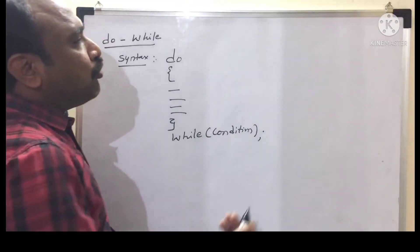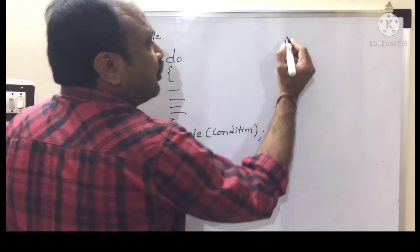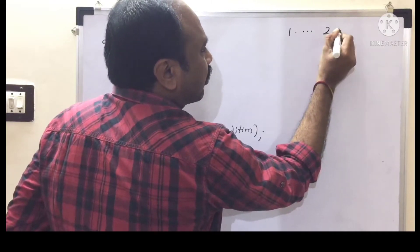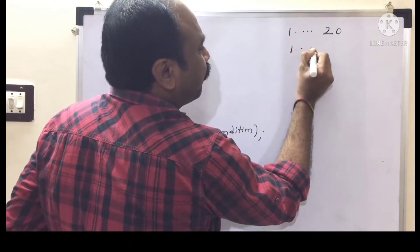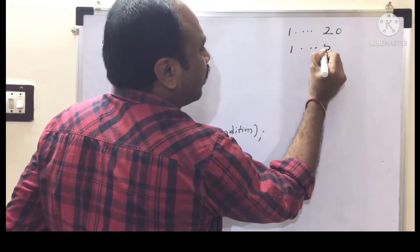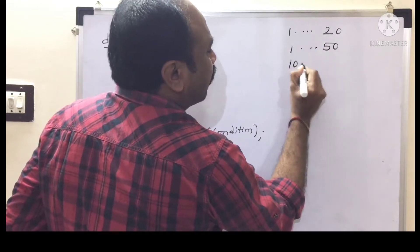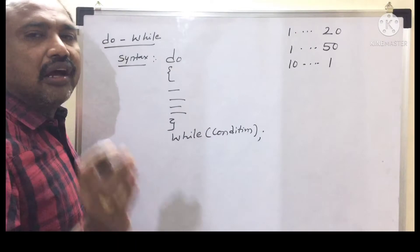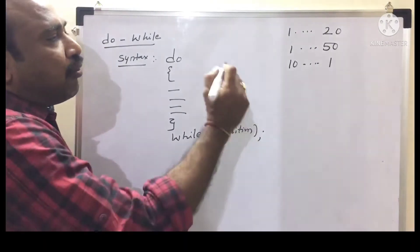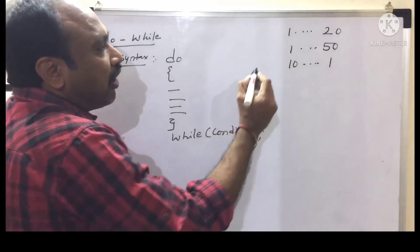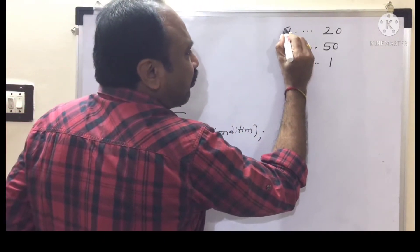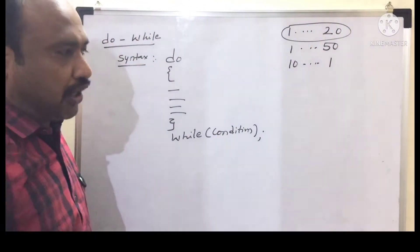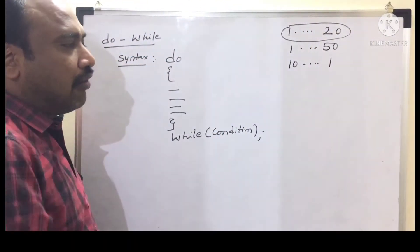When you are going to work with a series of values — 1 to 20, 1 to 50, or 10 to 1 — these types of series we have to use either while or do-while. For example, if I have to print the series of values 1 to 20 using do-while, I will explain with this example.